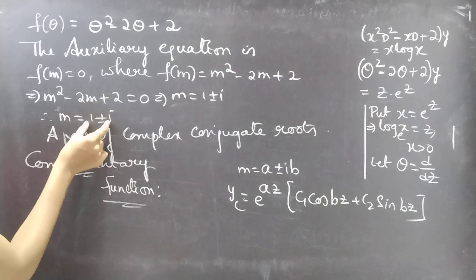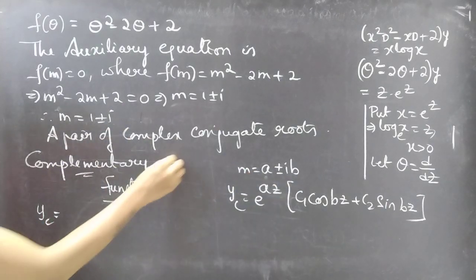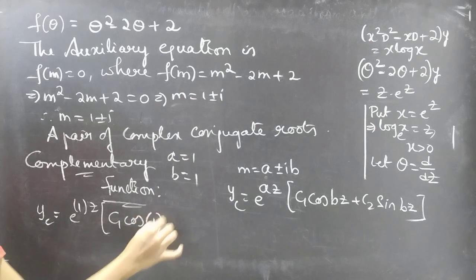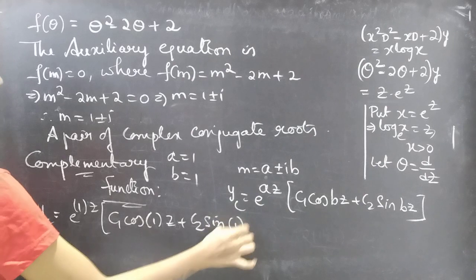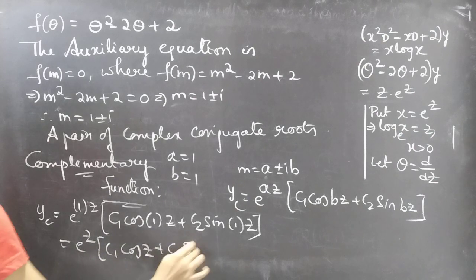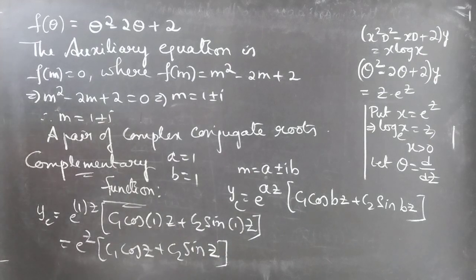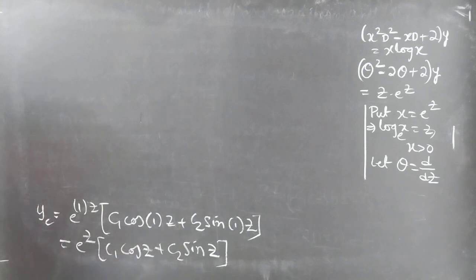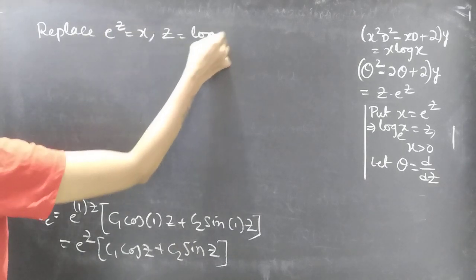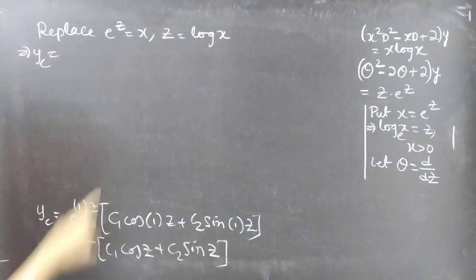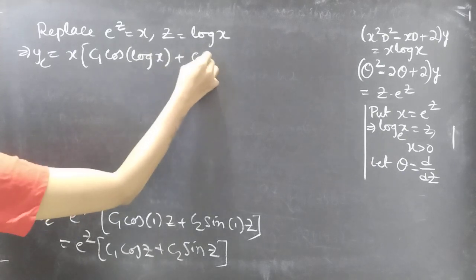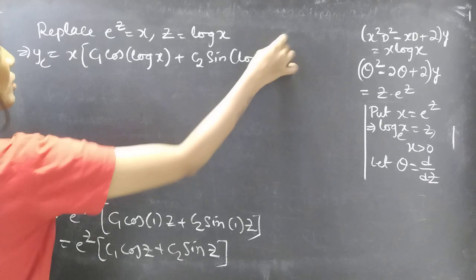Comparing 1 plus or minus i with a plus or minus ib, we get a equals 1 and b equals 1. So yc equals e to the z times c1 cos(z) plus c2 sin(z). We need to write this in terms of x, so we replace e to the z by x and z by log x. Then yc becomes x times c1 cos(log x) plus c2 sin(log x).